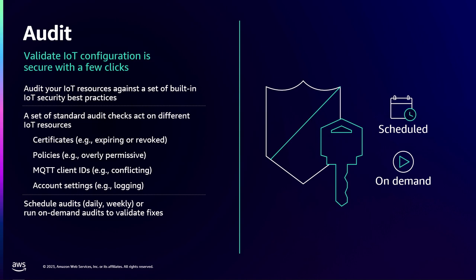So what is audit? With audit, you're auditing the security policies associated with your devices. You set up IoT policies and audit these security policies to ensure that they follow security best practices. That's what the audit capability in AWS IoT Device Defender does.